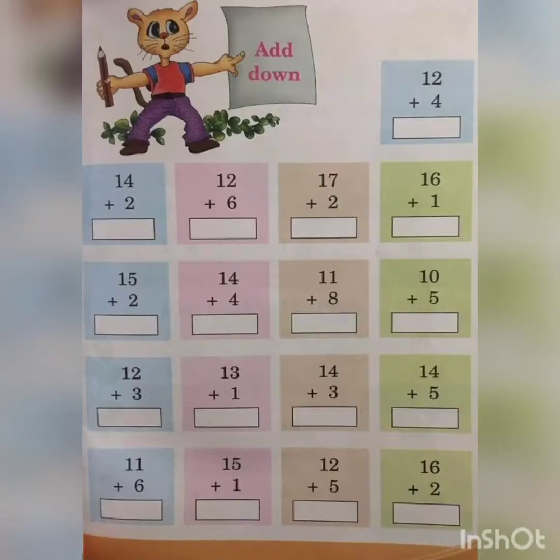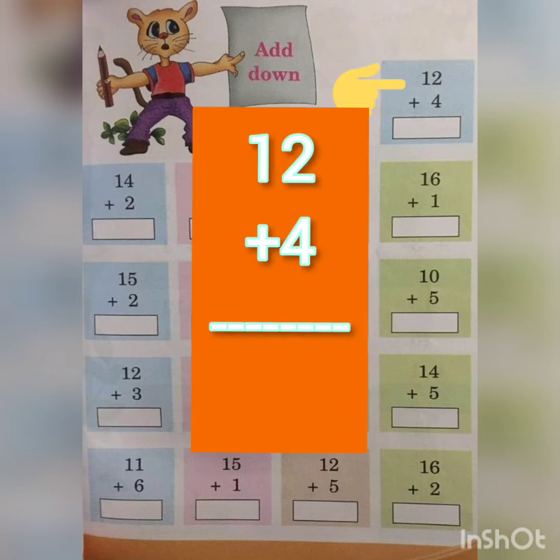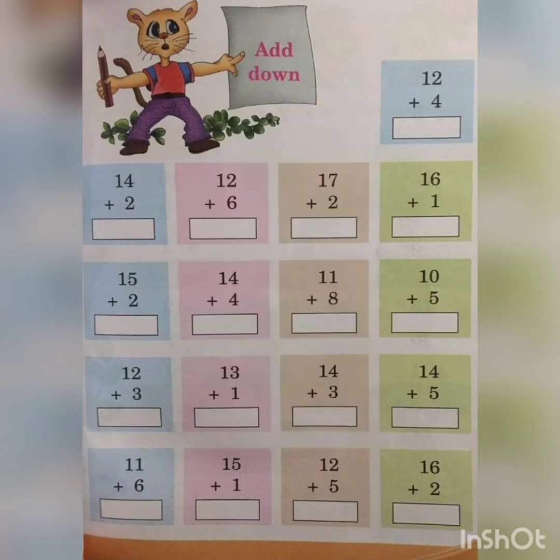Now turn to page 71 and this is also adding down. But I am going to teach you how to use a different method. Look at the first question, 12 plus 4. So instead of drawing 12 lines at once, you can look at the first two numbers on the right. On the right, you can see 2 and 4. So you can either use your fingers or draw lines: 2 lines and 4 lines.